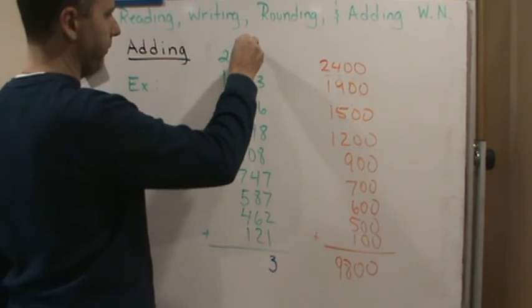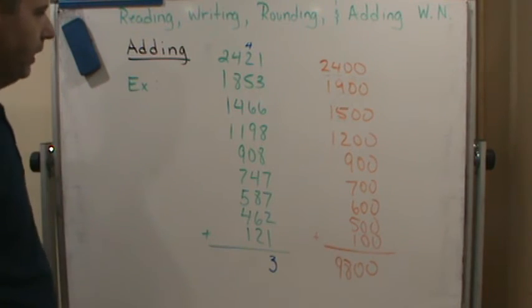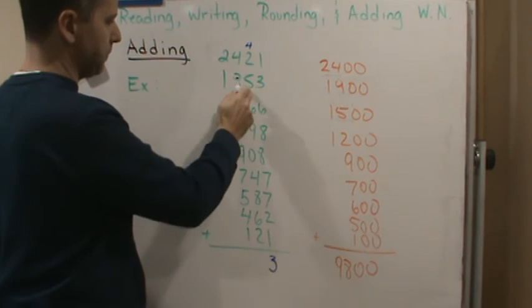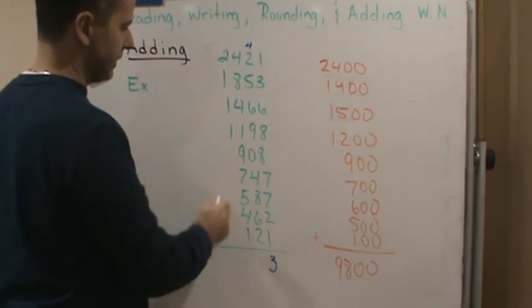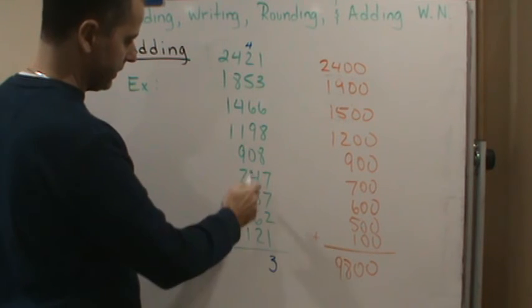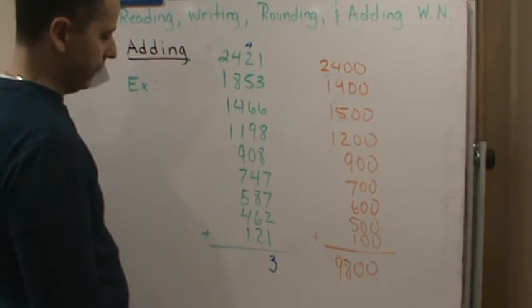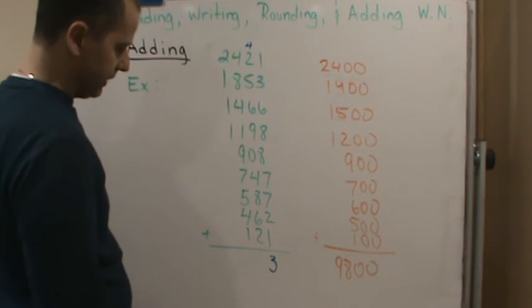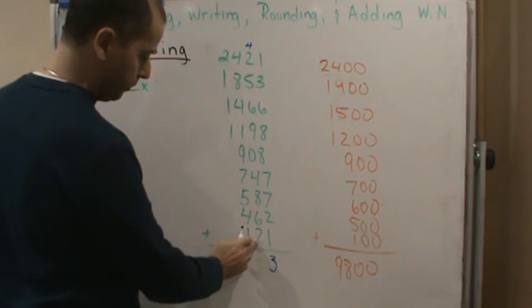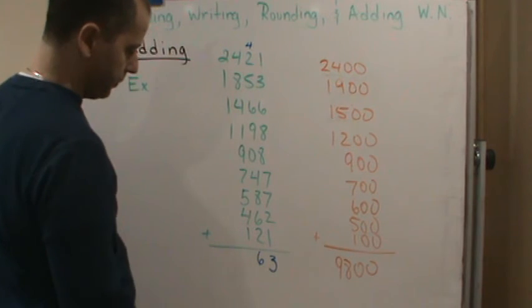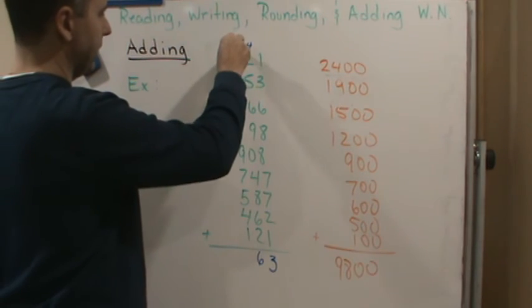I carry the four to the tens column and then I'm going to add the tens column. So I'm going to get four plus two is six, plus five is 11, plus six is 17, plus nine is 26, plus four is 30, plus eight is 38, plus six is 44, plus two is 46. So I'm going to put six in the tens column and carry the four.